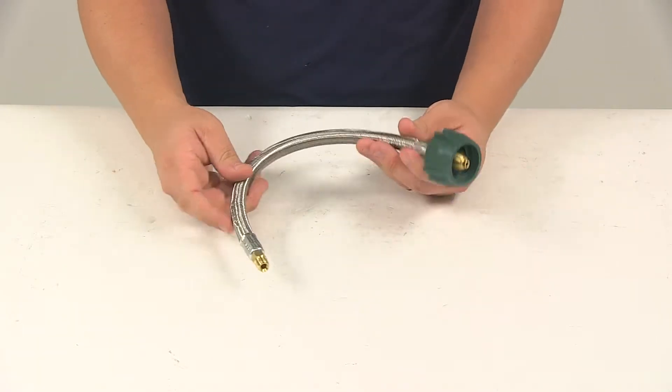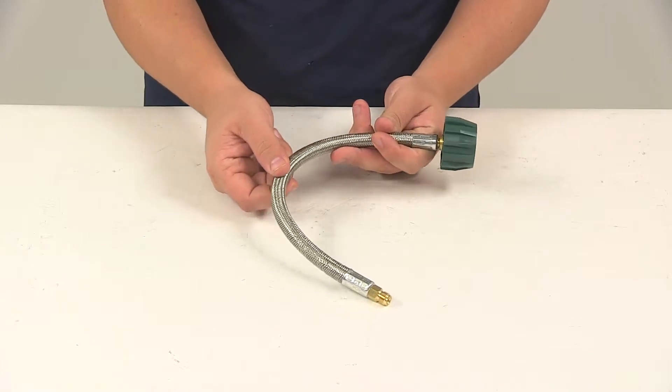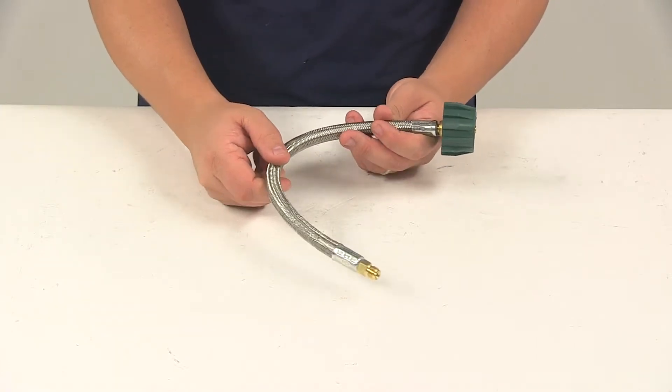It has nice thermoplastic construction with a stainless steel over braid. It's going to provide additional protection to the hose.